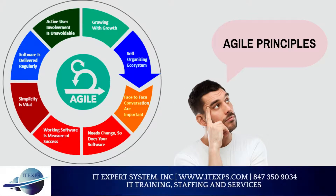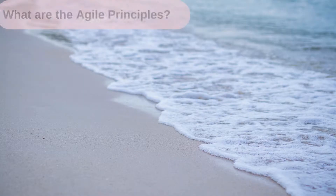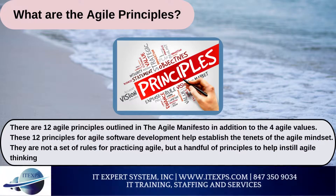Hello, welcome to IT Expert YouTube video series. Today we are going to talk about Agile Principles. There are 12 Agile Principles outlined in the Agile Manifesto, in addition to the 4 Agile Values. These 12 Principles for Agile Software Development help establish the tenets of the Agile Mindset. They are not a set of rules for practicing Agile, but a handful of principles to help instill Agile thinking.